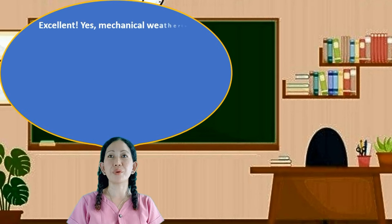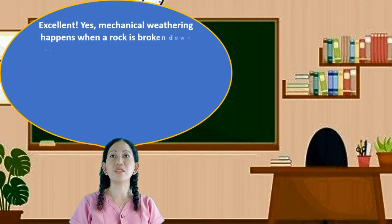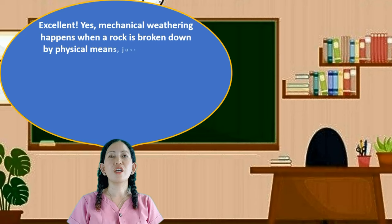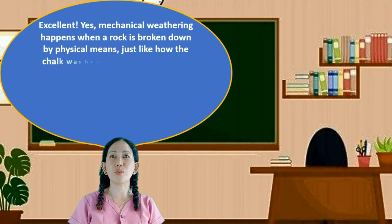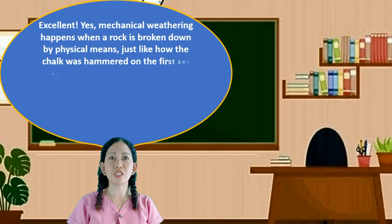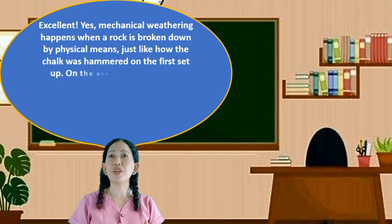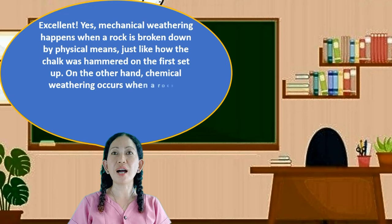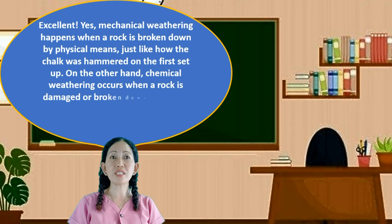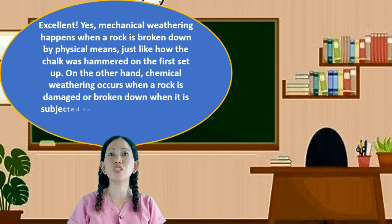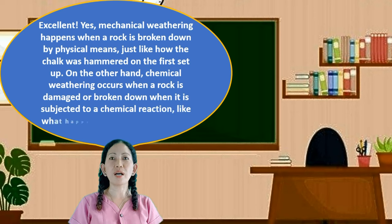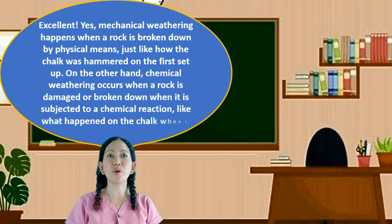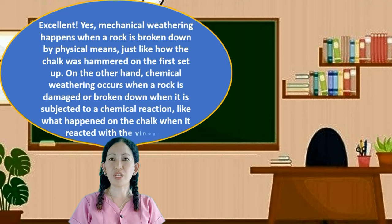Mechanical weathering happens when a rock is broken down by physical means, just like how the chalk was hammered in the first setup. Chemical weathering occurs when a rock is damaged or broken down when it is subjected to a chemical reaction, like what happened to the chalk when it reacted with vinegar.